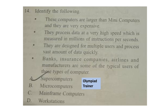Question 14: Identify the following. These computers are larger than minicomputers and they are very expensive. They process data at a very high speed, which is measured in millions of instructions per second. They are designed for multiple users and process vast amounts of data quickly. Banks, insurance companies, airlines and manufacturers are some typical users. The correct answer is option C — Mainframe computers.